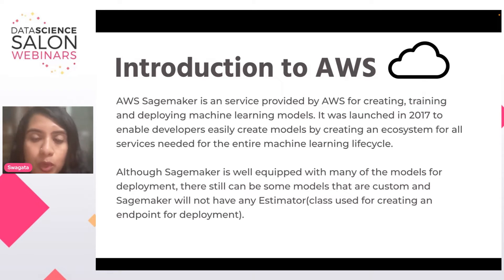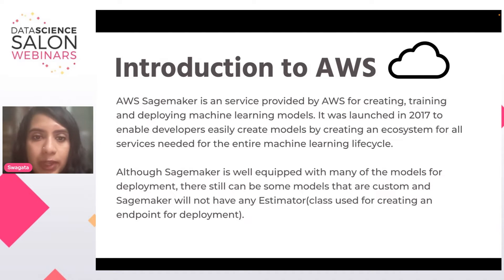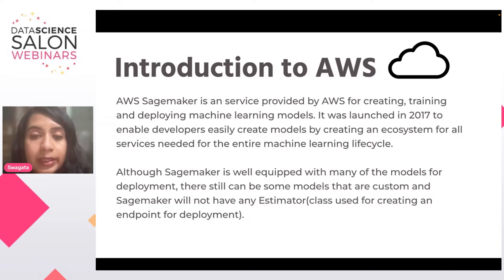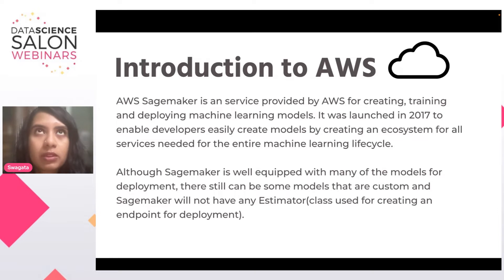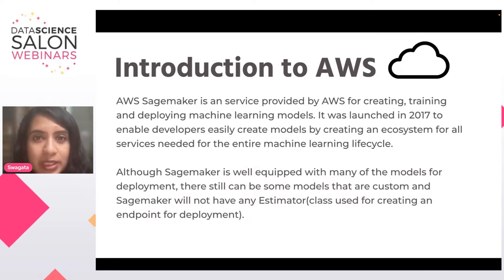SageMaker comes with Jupyter notebooks and IDEs that you can work with. It was initially launched in 2017, but in the past five years it has added more and more sub-services within its ecosystem. It's completely easy to use, intuitive, and can be used for the entire machine learning lifecycle. One drawback is that even though it comes with many inbuilt models and popular models like XGBoost, there are still many use cases where you might want to take an existing model and change it for your particular need. In that case, SageMaker will not have a provision for easy deployment — so SageMaker comes with a Docker-based approach, which we're going to learn in this tutorial.